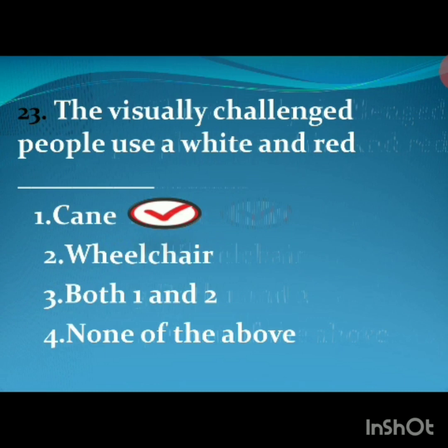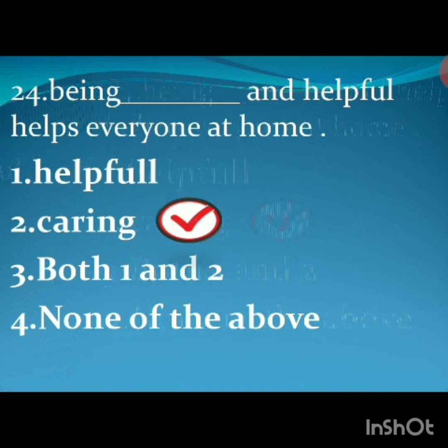Next: the visually challenged people use a white and red dash. The options are: first, cane; second, wheelchair; third, both cane and wheelchair; fourth, none of the above. The right option is the first option — cane. The spelling of cane is C-A-N-E. The visually challenged people use a white and red cane.